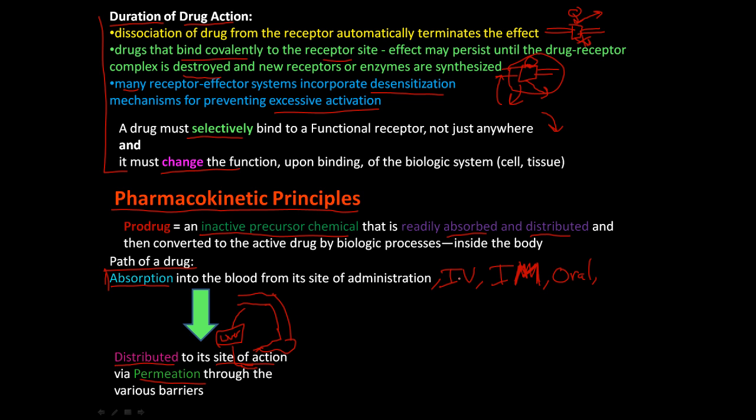Or if it's in an IV, you just bypass all that and go right into the venous system. Or if it's in the muscle, it doesn't have to go through the gut. So the engineering of drugs has to take into account how it's going to be activated, or how it's going to enter the body, and then what barriers it has to pass through before it reaches its target tissues.